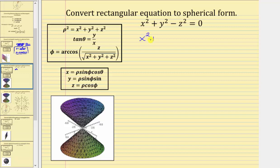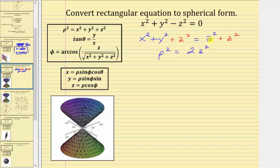On the right side, we first add z squared to undo the negative z squared on the left, giving us z squared, then add another z squared to the right. So the left side, x squared plus y squared plus z squared, equals rho squared, which gives us rho squared equals two z squared. Since z equals rho cosine phi, z squared equals rho squared cosine squared phi, which gives us rho squared equals two rho squared cosine squared phi.